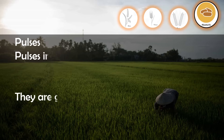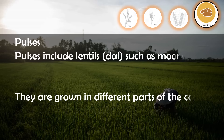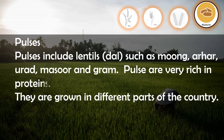Pulses include lentils and dals such as moong, bhura, urad, and masoor gram. Pulses are very rich in proteins. They are grown in different parts of the country.